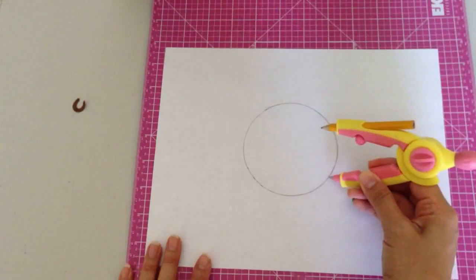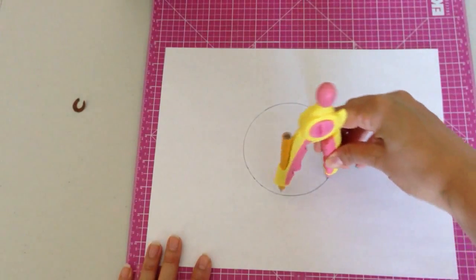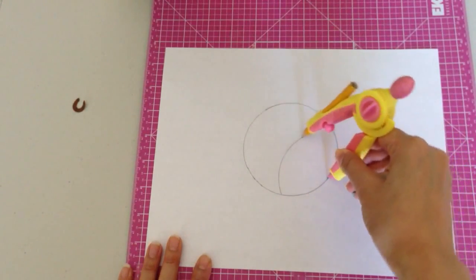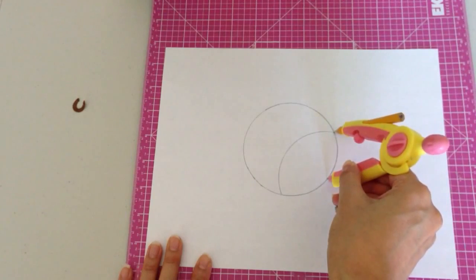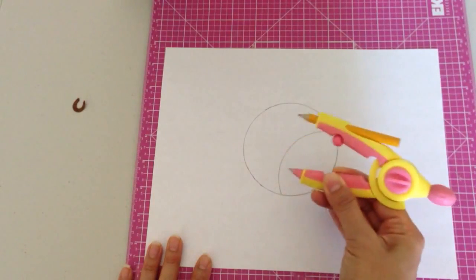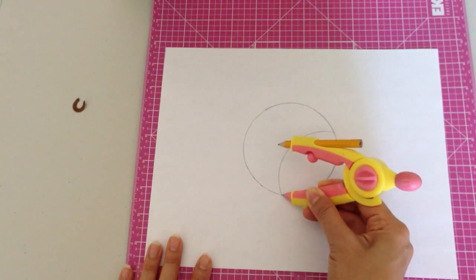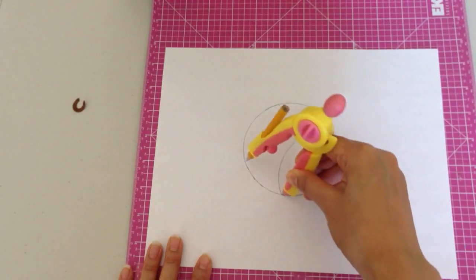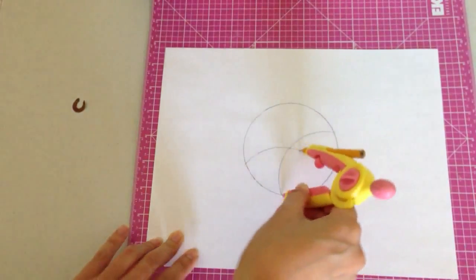Then you're just going to start at any point around the circle and draw a semicircle this way. Then you're going to take the point of the compass and touch it to where the previous line intersects, and then you're just going to keep going like that.